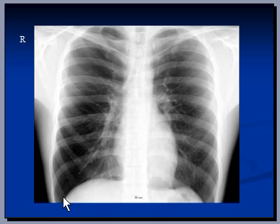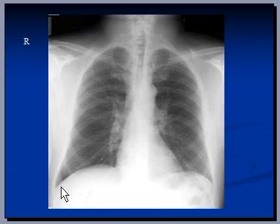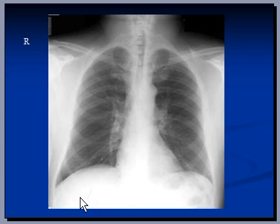The costophrenic angles are not visible on this X-ray, so it's probably not a good X-ray to comment on pleural effusion. On this other X-ray, you can see the right costophrenic angle and left costophrenic angle very nicely and clearly. If there was a small pleural effusion, this is the area that will go blunt and you won't be able to see either the right or left costophrenic angle, depending upon which lung the pleural effusion is in.